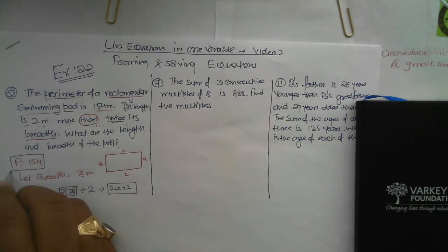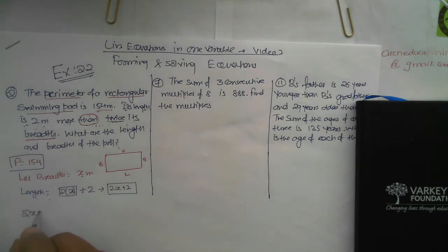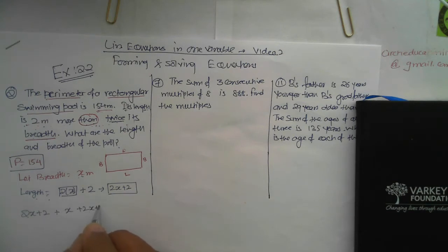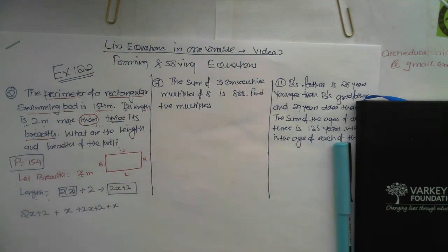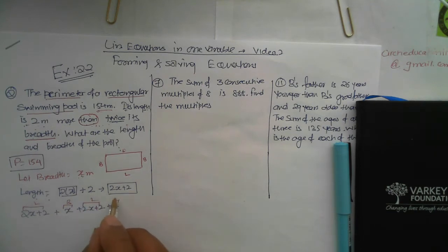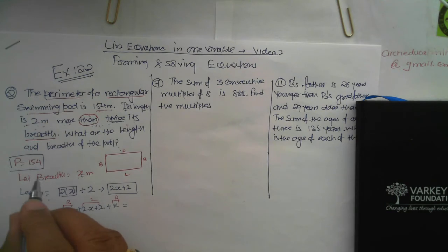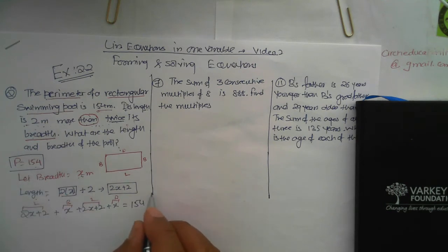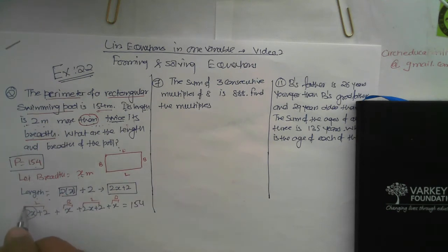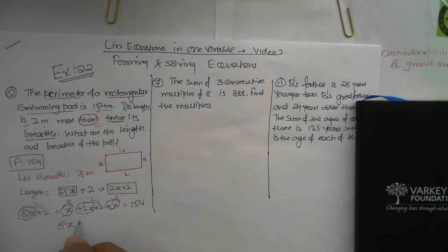We use the given information to make an equation. The perimeter is length plus breadth plus length plus breadth: (2x + 2) + x + (2x + 2) + x = 154. Simplifying: we have 2x + x + 2x + x which is 6x, plus 4, equals 154. So the equation is 6x + 4 = 154. I'll leave you to solve this — DIY, do it yourself — and we'll check the answer a little later.